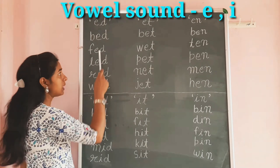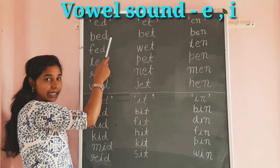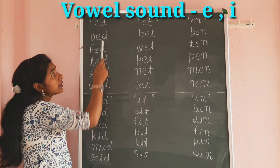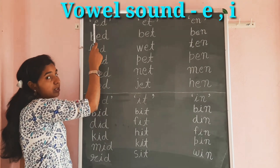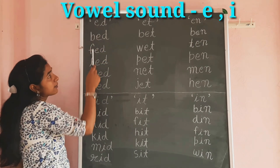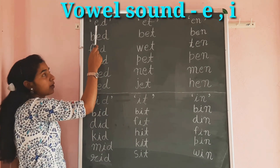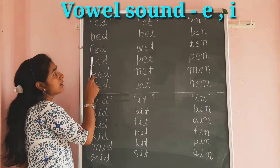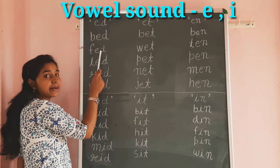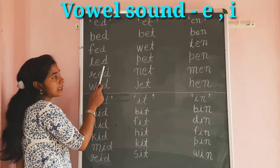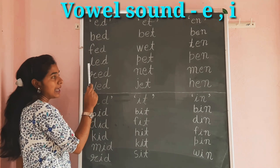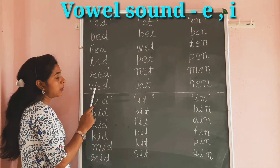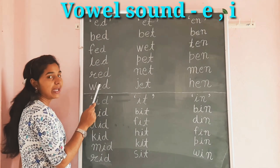Now we learn the sound of E with the help of all these words. We make words with the help of E-D: B-E-D, Bed. F-E-D, Fed. L-E-D, Led. R-E-D, Red. W-E-D, Wed.